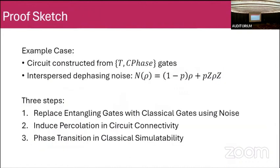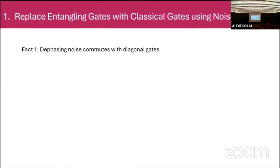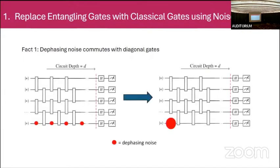To show how it works, I'll go through an example: an IQP circuit with T-gates and controlled phase gates, with interspersed dephasing noise. The algorithm works in three steps. The first fact we use is that dephasing noise commutes with diagonal gates. So you can take every single dephasing noise channel, commute it to the beginning of the circuit, and now you have a larger-strength dephasing noise channel at the beginning because noise builds up. This exploits the commuting structure of the IQP circuit.